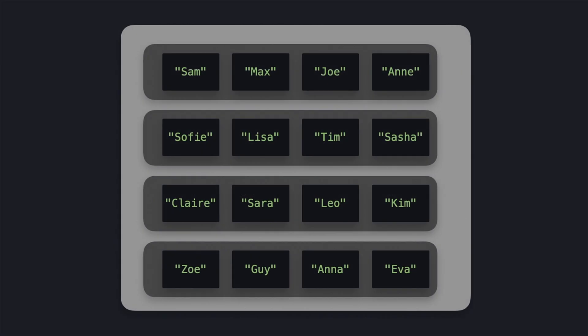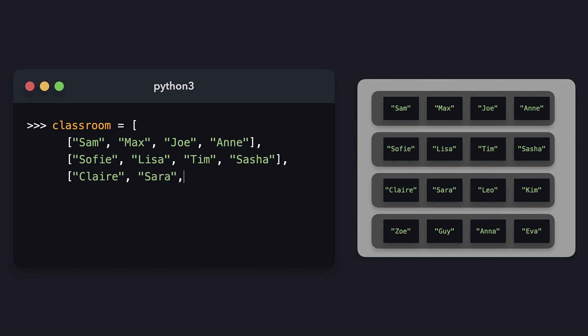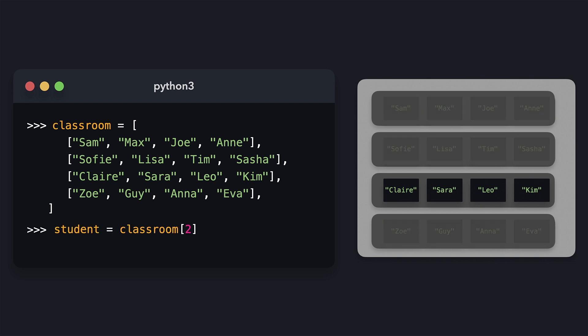So far, we've only had lists whose elements were just single values. However, the element of a list can also be another list. Let's take a classroom example — there are four rows, each with four students. We create a list with four elements, where each element represents a row of students which each have four elements representing each student. This is called a 2D array or a matrix. To get an individual student like Sarah, we first access the row — the third row is at index 2 — then within that row, Sarah is at index 1. When we print student, we see it's equal to Sarah.